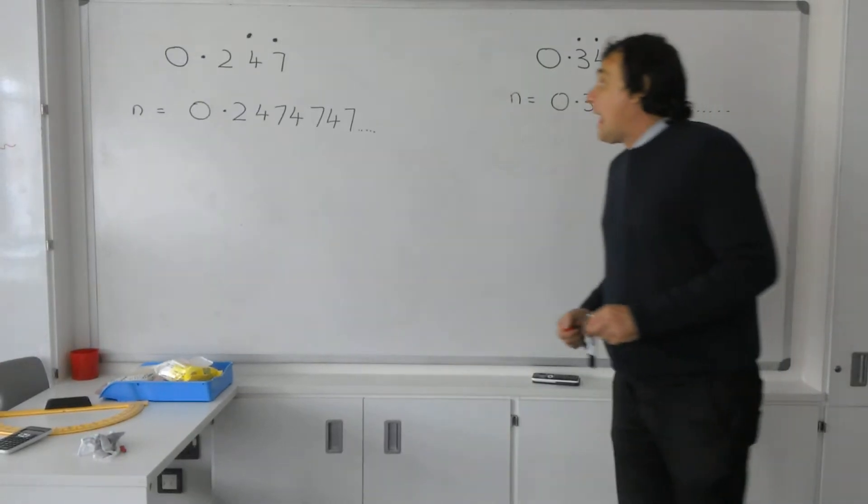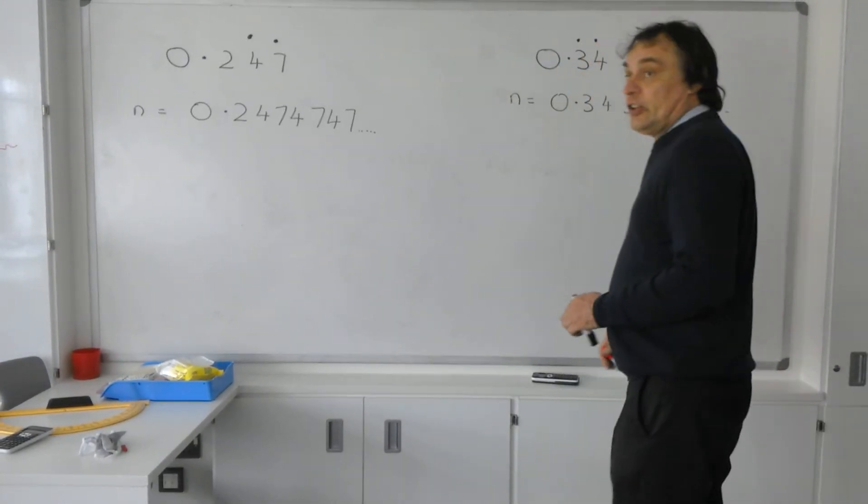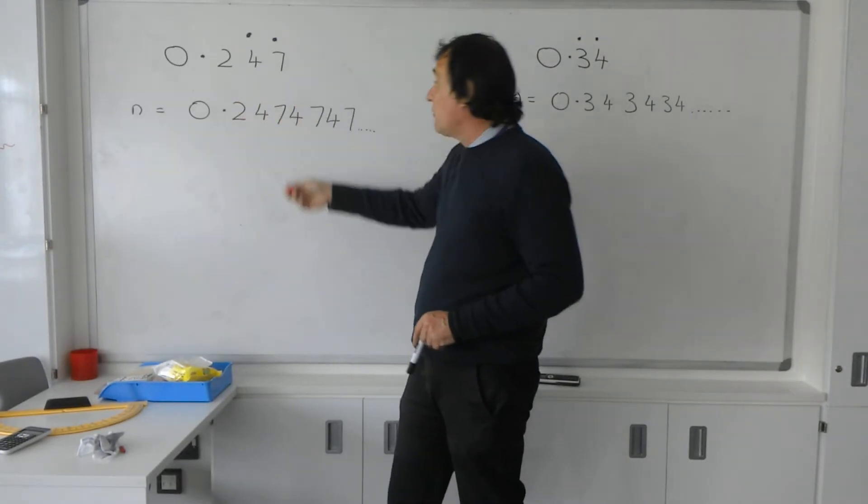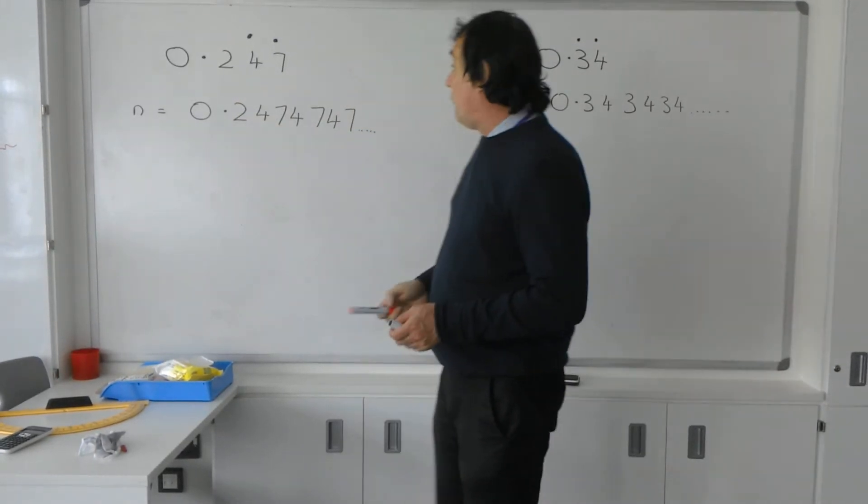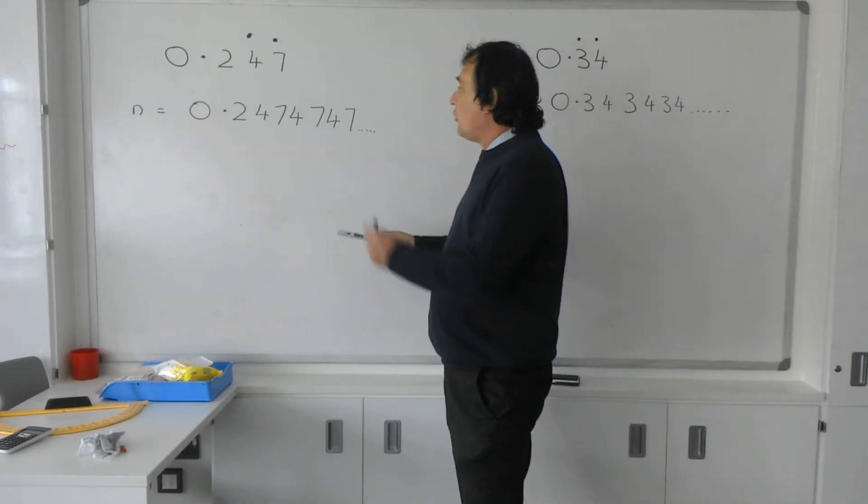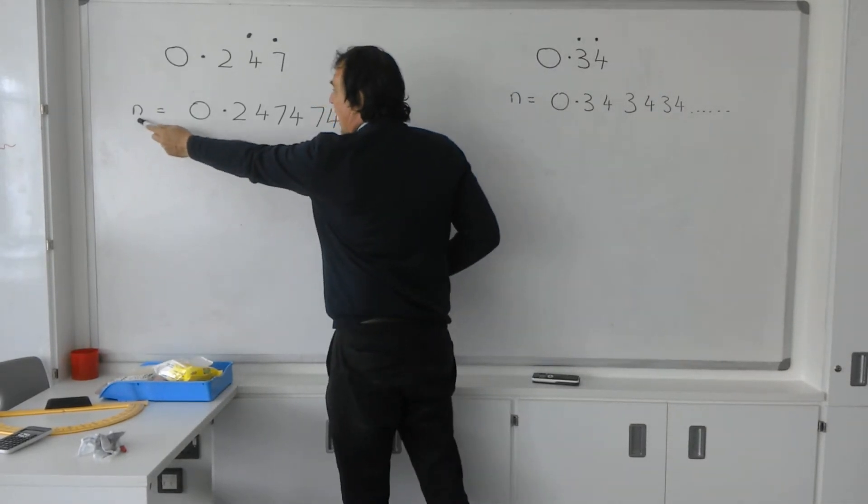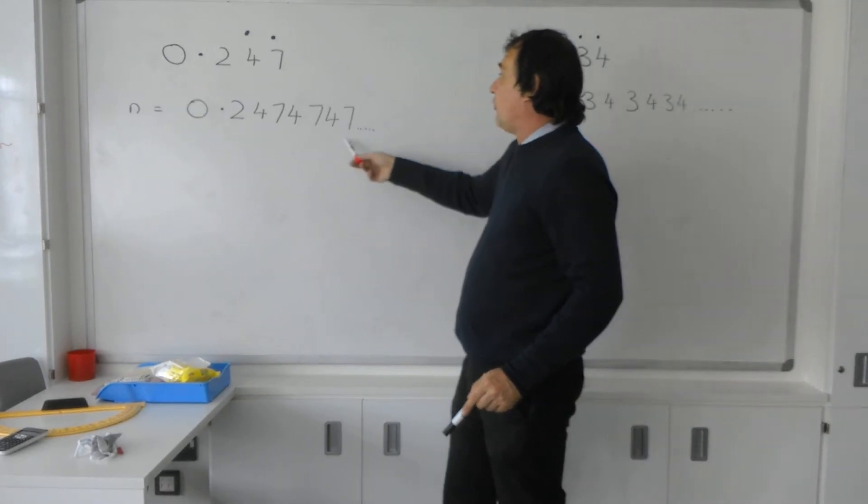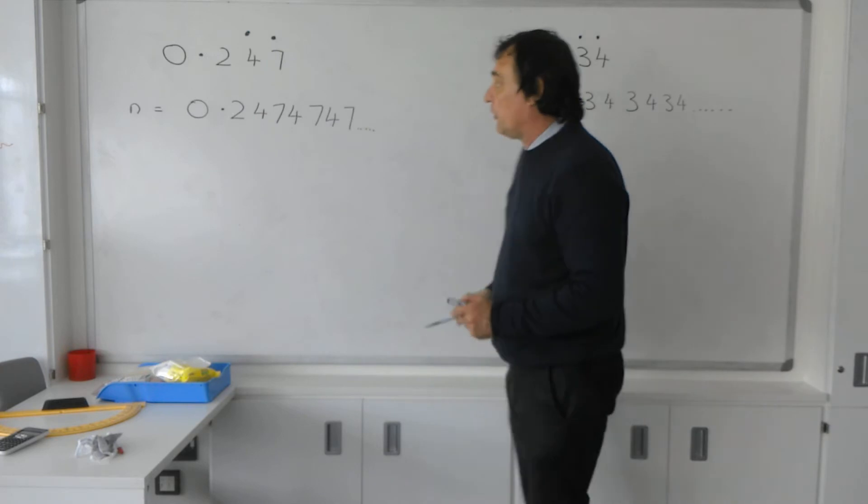Converting recurring decimals into fractions. We've got a recurring decimal here, 0.247. The dots are above the 4 and the 7. So if we were to write it, we'd call it N. Let's write it out fully. It would be 0.2474747 as these two dots are above the 4 and the 7.